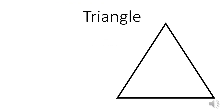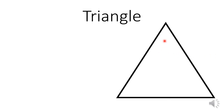The next shape is the triangle. This is the triangle. The triangle is a shape which has three corners and three sides. Let's count: one, two, three corners, and also three sides: one, two, three.